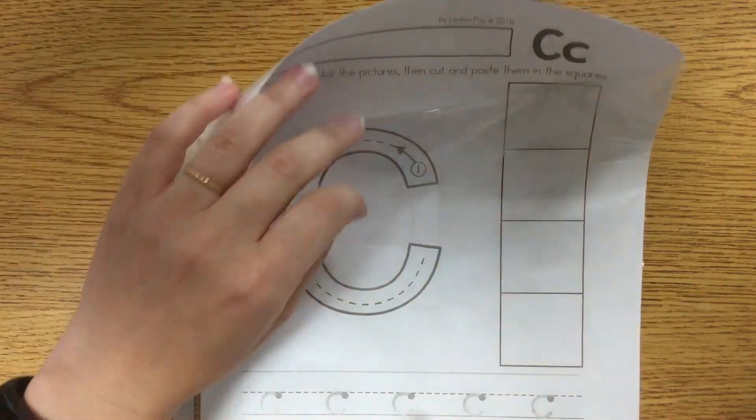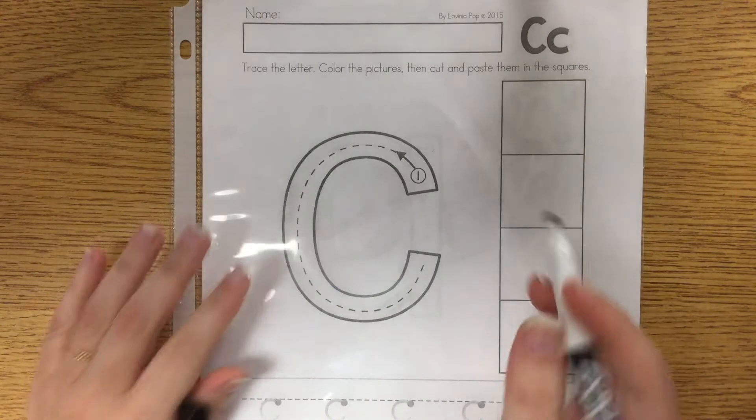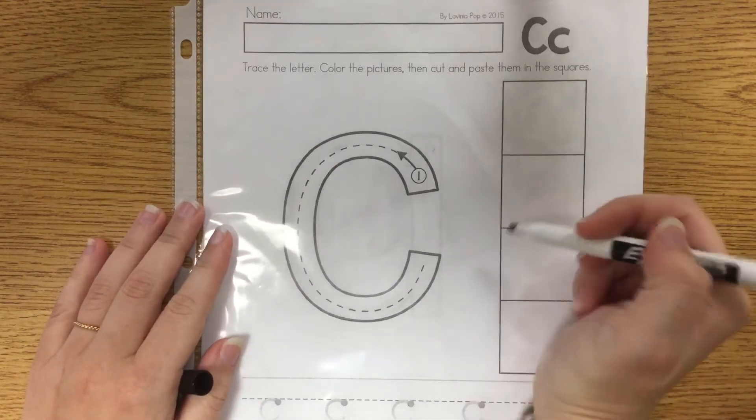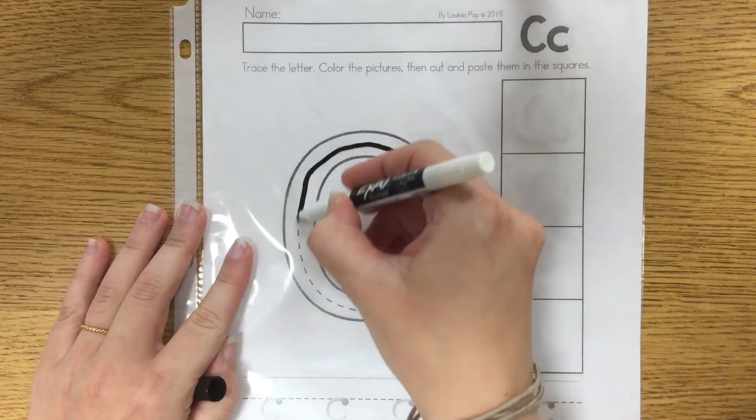So I've got the C paper in the plastic and I use the black Expo marker. What I tell the kids to say while they make the C is they start up here at the top and they say around like a C.